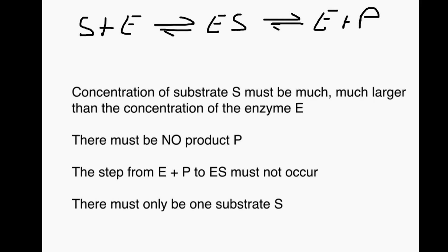In order for this Michaelis-Menten equation to work, they had to make a few very important assumptions. Here we've got our scheme again: substrate plus enzyme form the enzyme-substrate complex, and then this forms the enzyme again and the product.